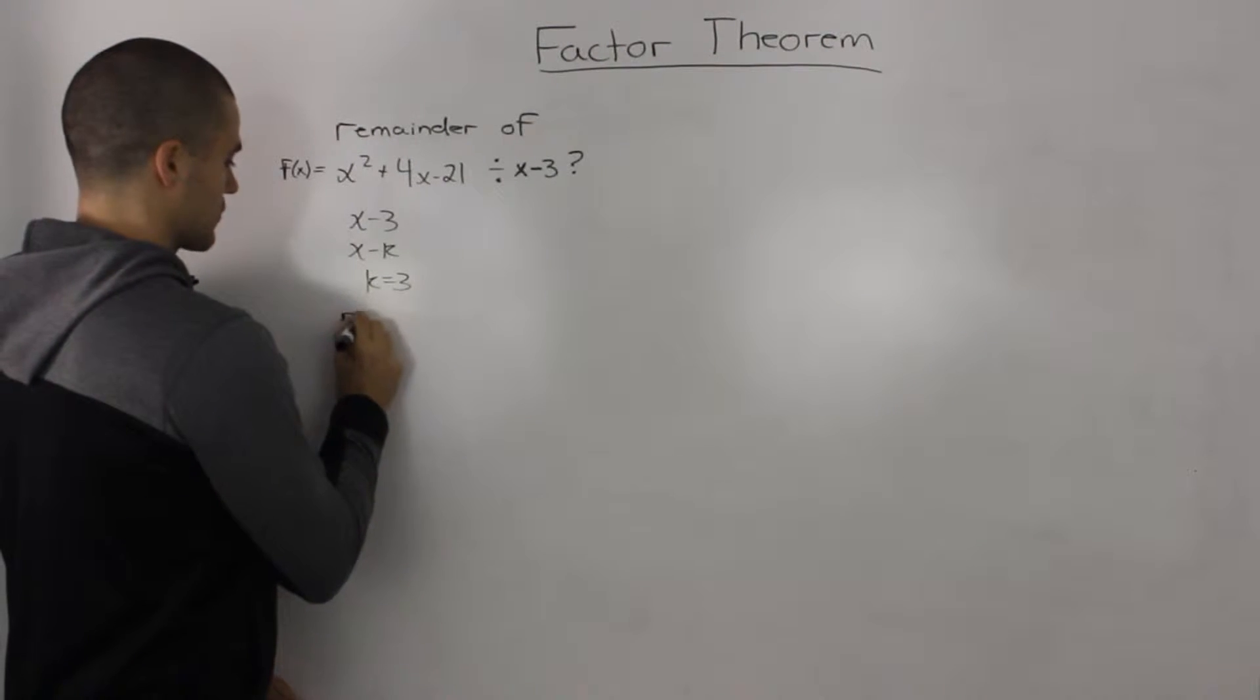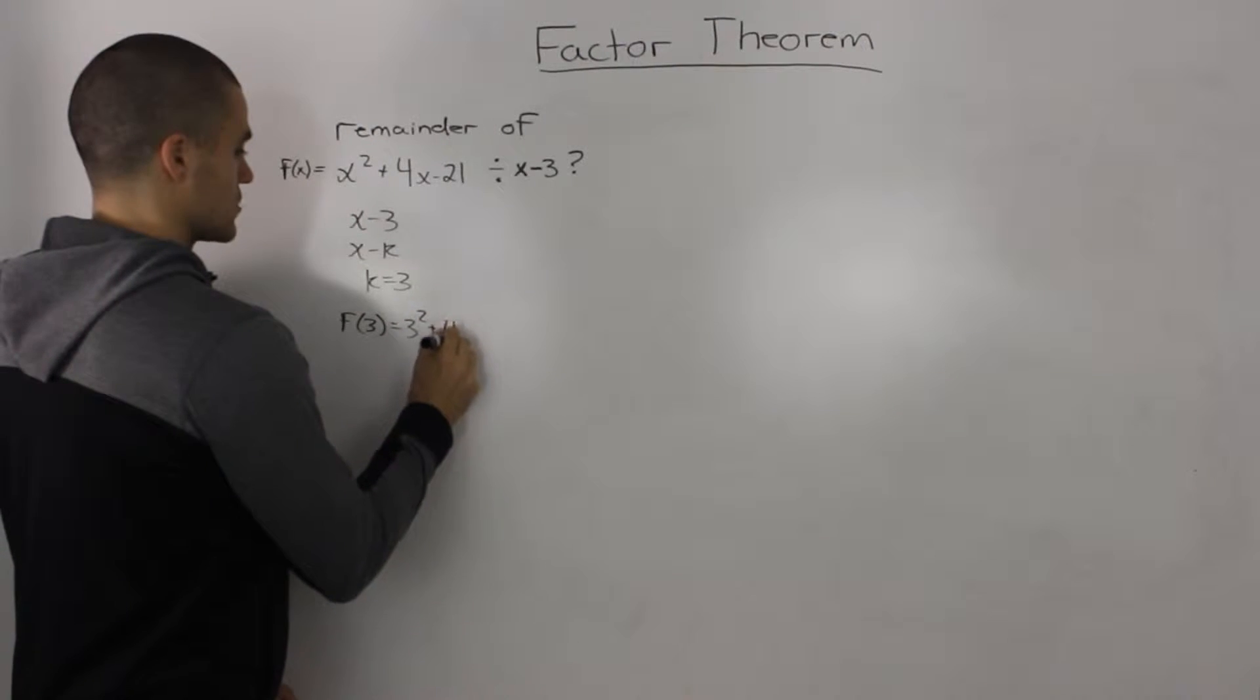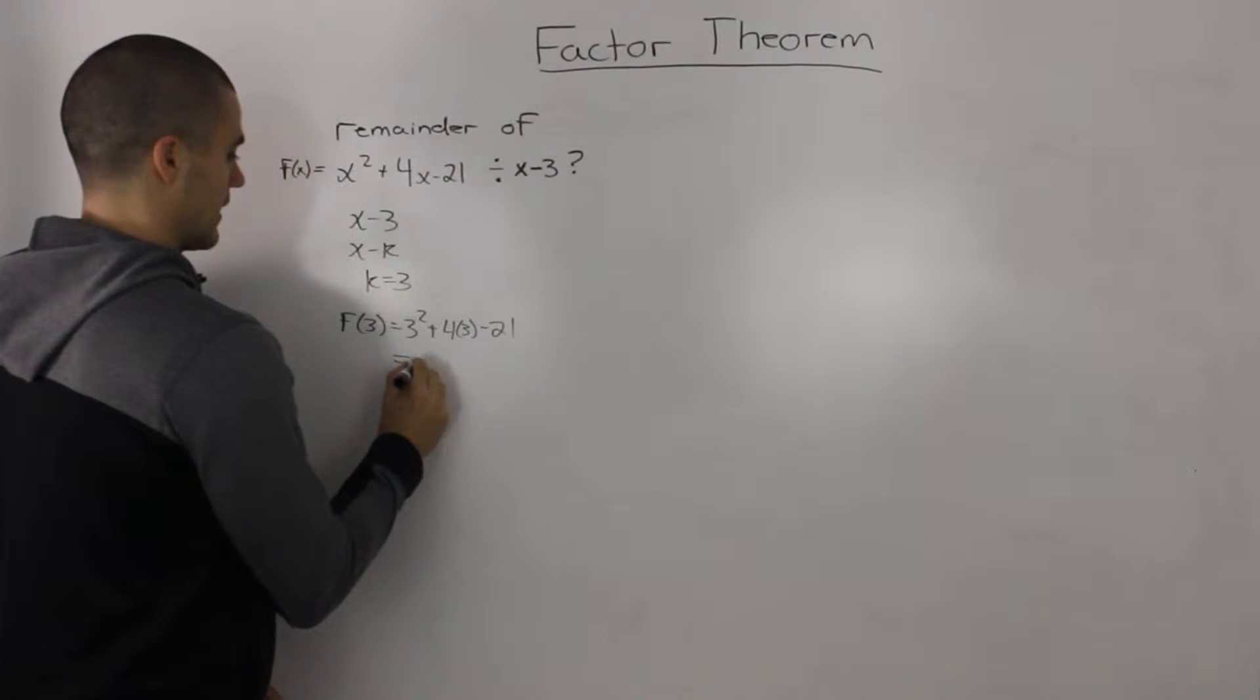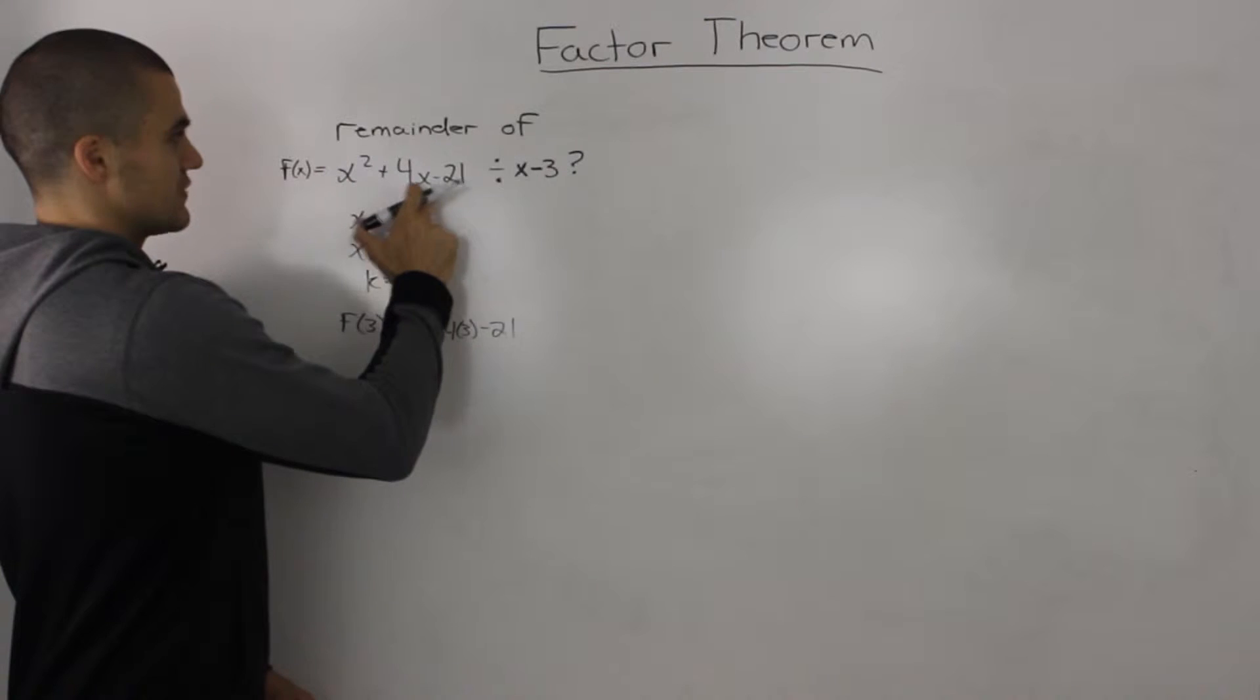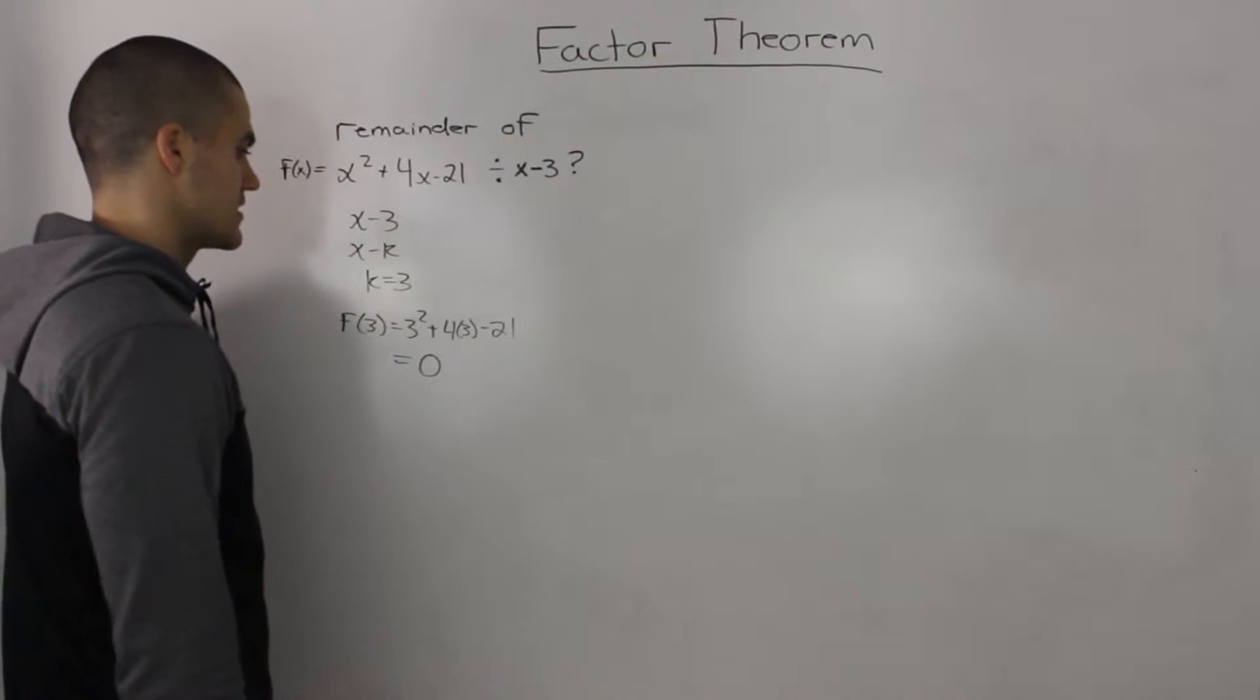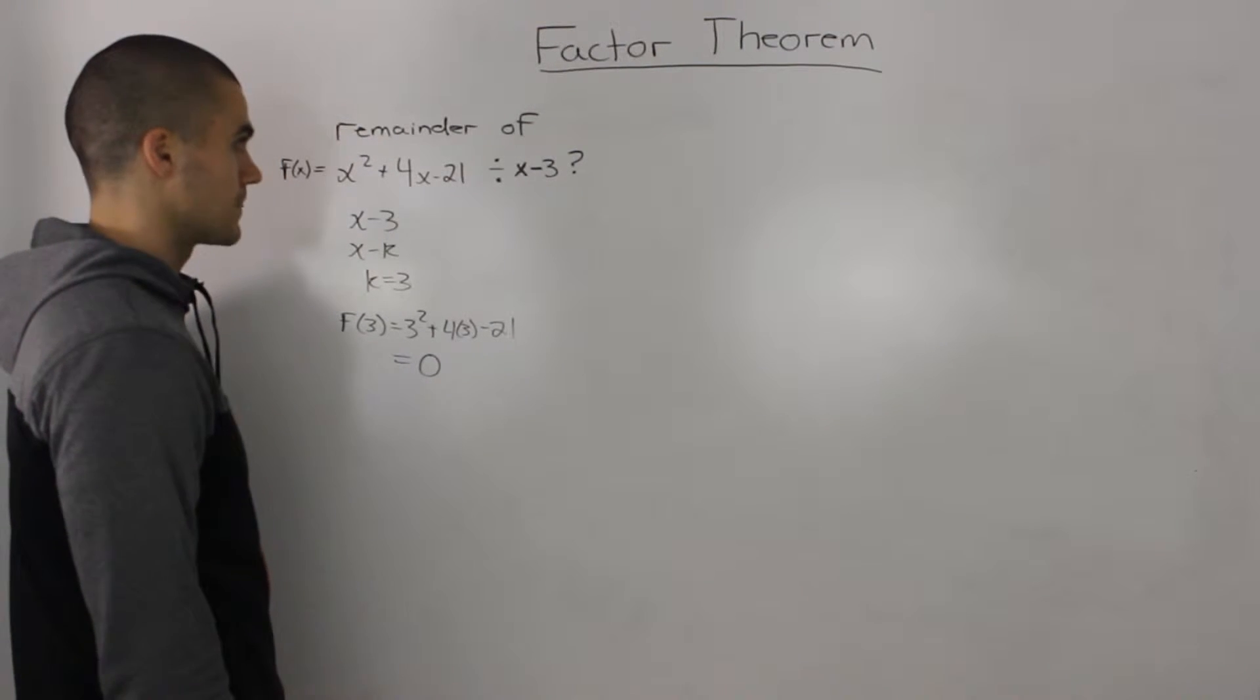So f(3) = 3² + 4(3) - 21, and that equals 0. When this dividend is divided by x - 3, the remainder is 0. Now what does the remainder of 0 really mean?